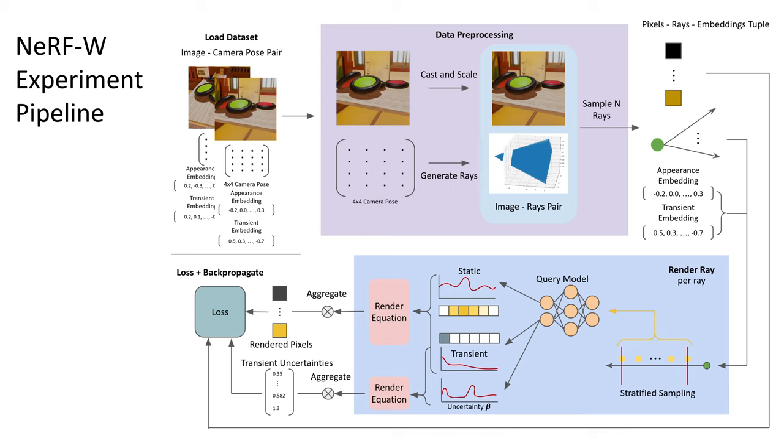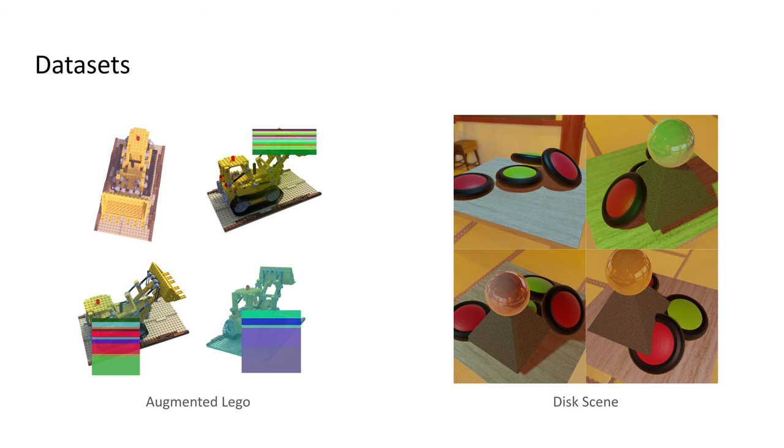During training of NeRF-W technique, both static and transient densities and colors are used to render the pixel. Additionally, the uncertainty field is also rendered. The rendered pixel colors and transient uncertainty are used to calculate the loss for the neural network. And during inference, only the static densities and colors are used to render the final output, which is free of transient objects. Additionally, an appearance for the render output can be chosen through the appearance embedding.